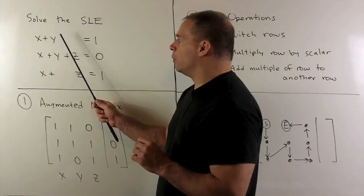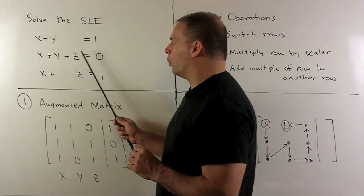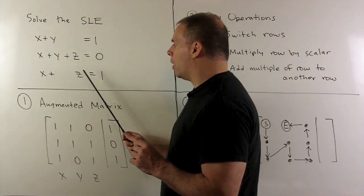So, we'll have 1, 1, 0, 1. So there's a 0 in front of the z here. We have 1, 1, 1, 0. Then, we have 1, 0, 1, 1.